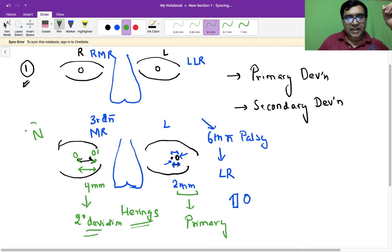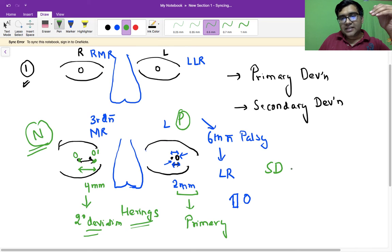the normal eye, so here it is normal as compared to the one where there is a palsy, so the secondary deviation is more than primary deviation in cases of paralytic squint. So primary deviation is the amount of